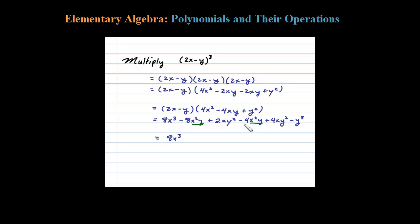Negative 8 plus negative 4 is negative 12x squared y, and then I have an xy squared, 2 and a 4. 2 plus 4 adds up to 6xy squared, and then the last term there minus y cubed.